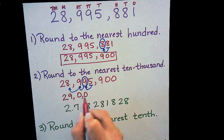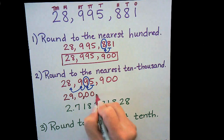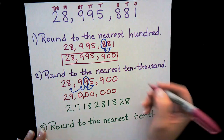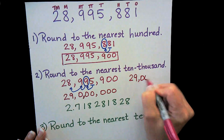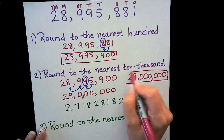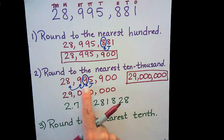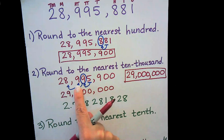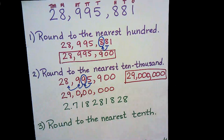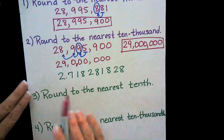Any number after our circled digit becomes zero. So we get 29 million. That was a tricky one — bumping up the ten thousands place started a chain reaction because of the nines. Each nine became ten and forced the next digit up as well. That's what happens when you have nines in play. Now let's look at our next number — I've got a decimal here.